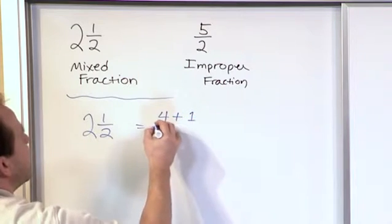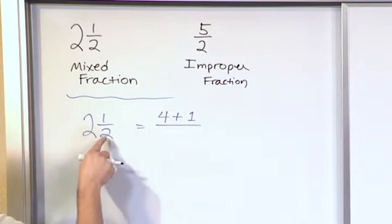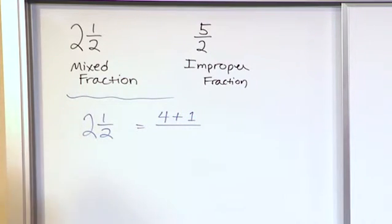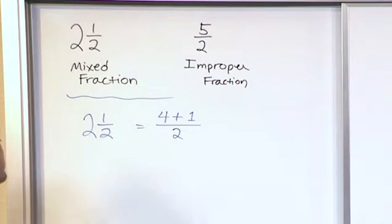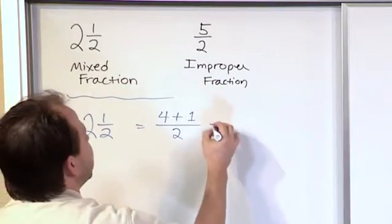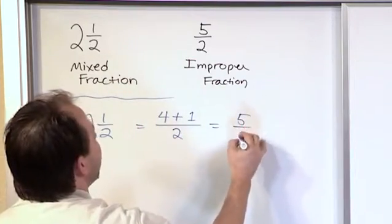So what you have is you put a four and then you add to it whatever the numerator is. In this case, it's one. Then you draw your fraction bar and the denominator, the number two that you have in your fraction, it just stays the same. Then you have four plus one is five. So here we have five halves.